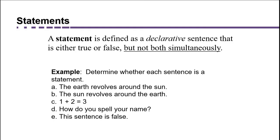This sentence is false. This is a tricky one. It is a declarative sentence. Suppose it's referring to itself — when it says 'this sentence is false,' it means itself. If we assume the sentence is true, it contradicts us because it says it's false. If we assume it's false, then by saying it's false, it's actually saying it's true. So we have a paradox — it can be both simultaneously, and so it's not actually considered a logical statement.